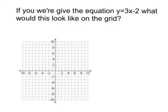So, what would the line look like for this equation y equals 3x minus 2? Well, to start with, we use the y-intercept. We know it's going to cut through the y-axis at minus 2, which is just here.